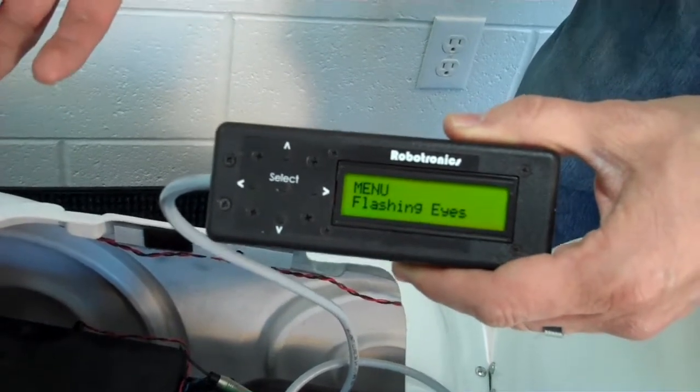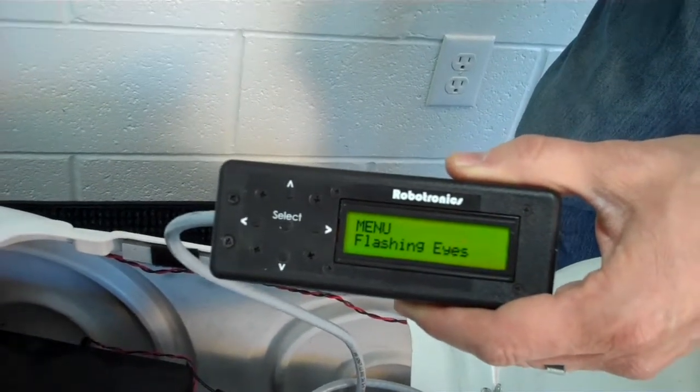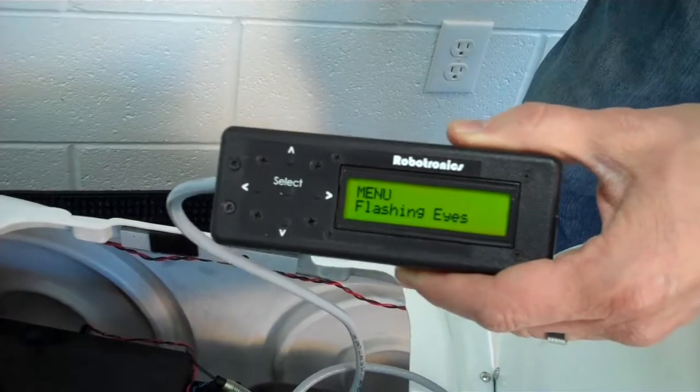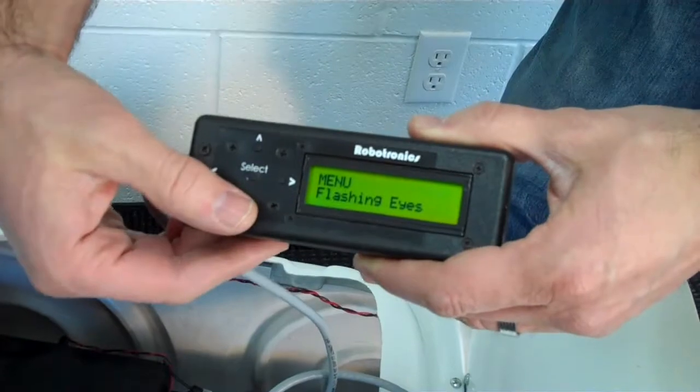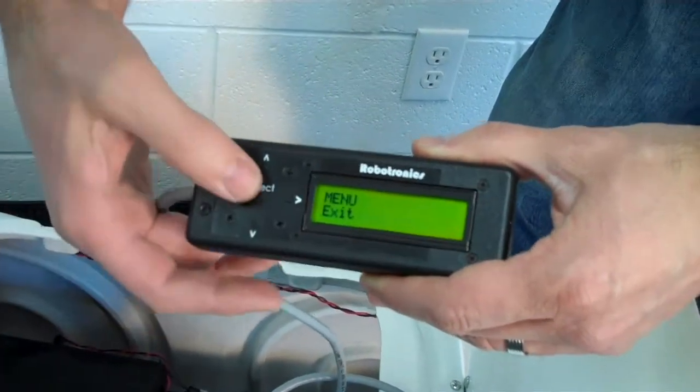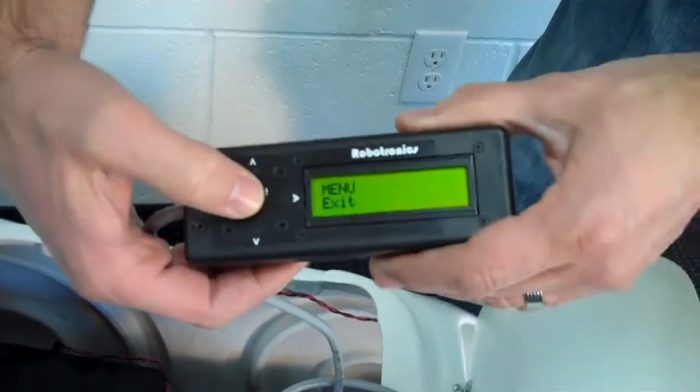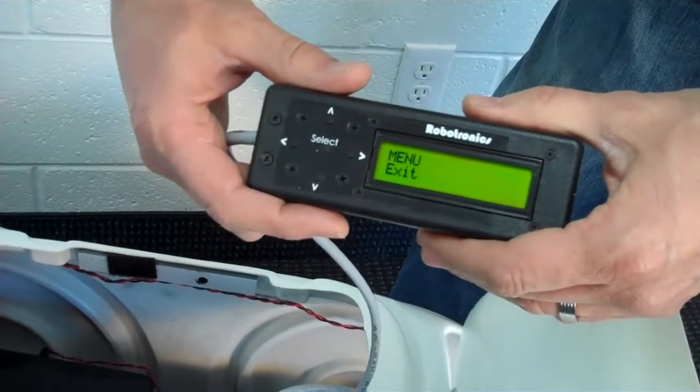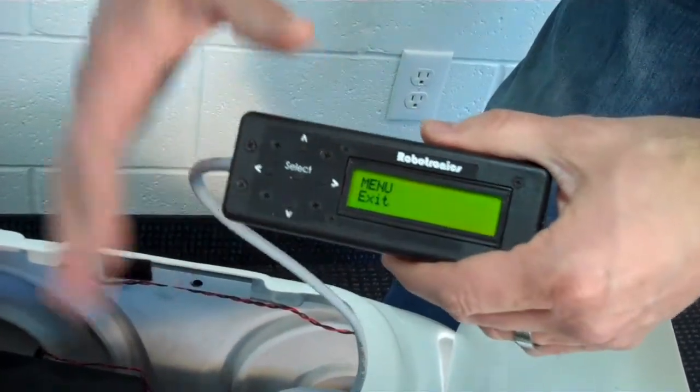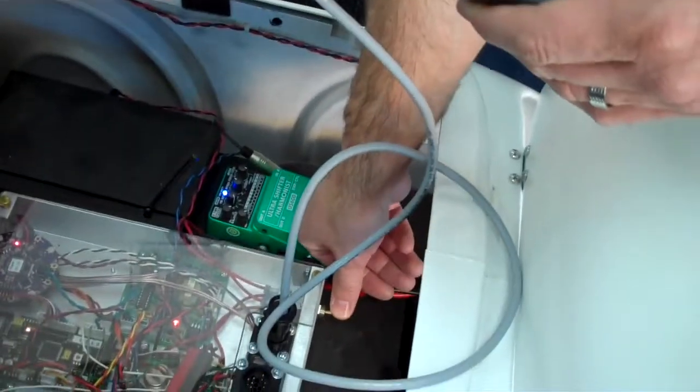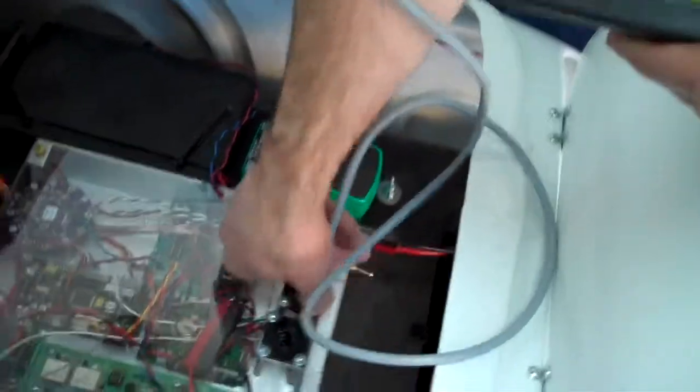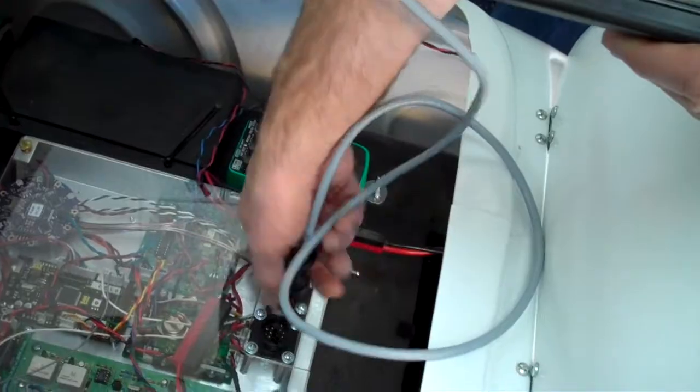With the flashing eyes on, when you speak, the eyes will flash. Some people like that feature and some people don't like the eyes flashing. So here's where you can turn that feature on and off. And that's all of the features of the LCD interface. Once you're done making your settings, turn it off. Turn the robot off first and then disconnect by turning it the other way and pulling it back off.